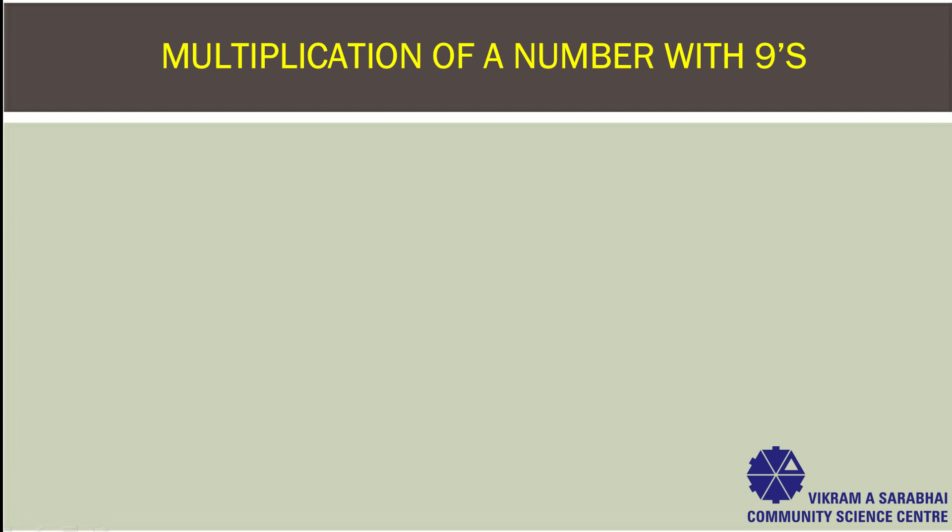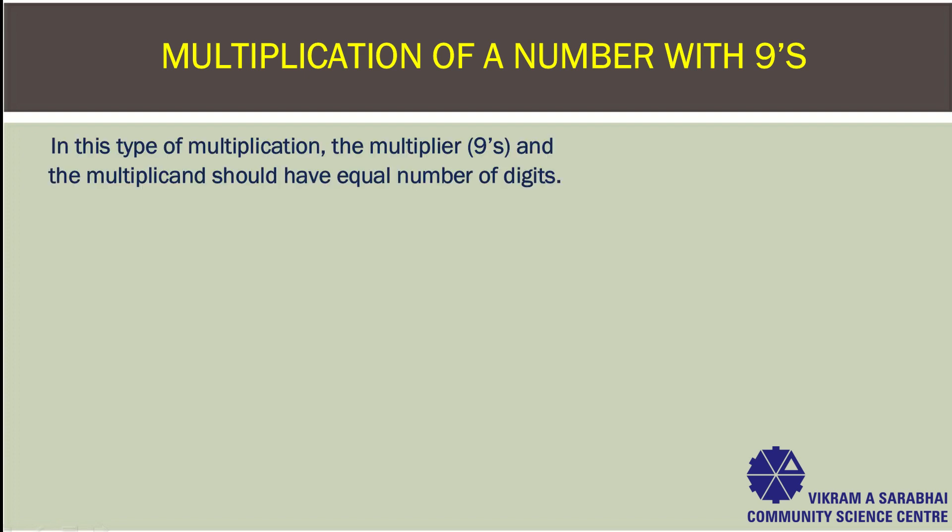Multiplication of a number with nines. In this type of multiplication, the multiplier nines and the multiplicand should have equal number of digits.